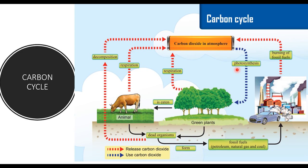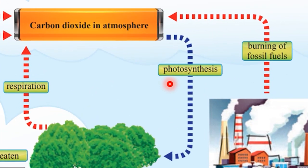The carbon cycle begins when green plants absorb carbon dioxide through photosynthesis. Green plants use carbon dioxide and sunlight to make their own food and grow. Animals that eat the plants obtain carbon compounds from them.